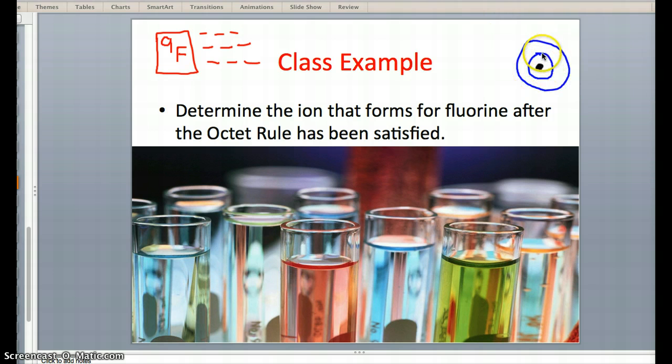Now fluorine is going to fill its first shell first, as all atoms do, with 2 electrons. So I can get rid of 2 of these electrons right here. I count up, I have 1, 2, 3, 4, 5, 6, and 7.